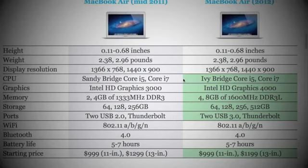Moving on to graphics — the new one's a bit better. It goes from Intel Graphics 3000 to Intel Graphics 4000. I'll be honest, I don't know much about graphics cards. I see the bigger number and I assume 4000 must be better, but I don't fully know the technology behind it.